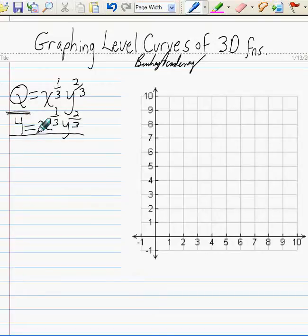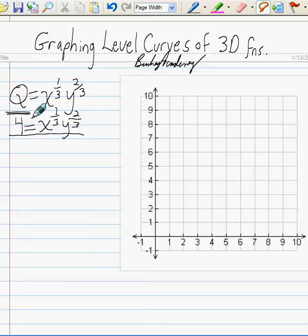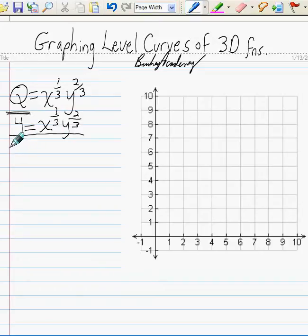So if we want to solve this equation for y, what are the various steps we'd want to go through? Well I'd want to move this x to the one-third over to this side. So we'll divide both sides of this equation by x to the one-third. So we're going to have 4 divided by x to the one-third equals y to the two-thirds.